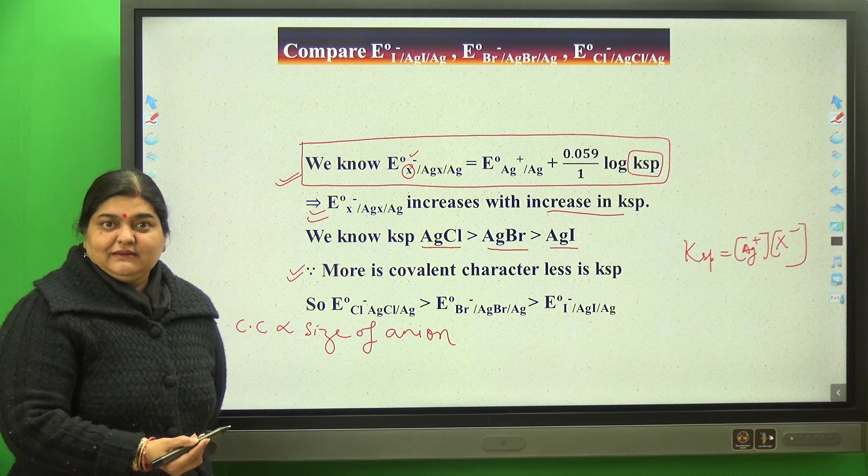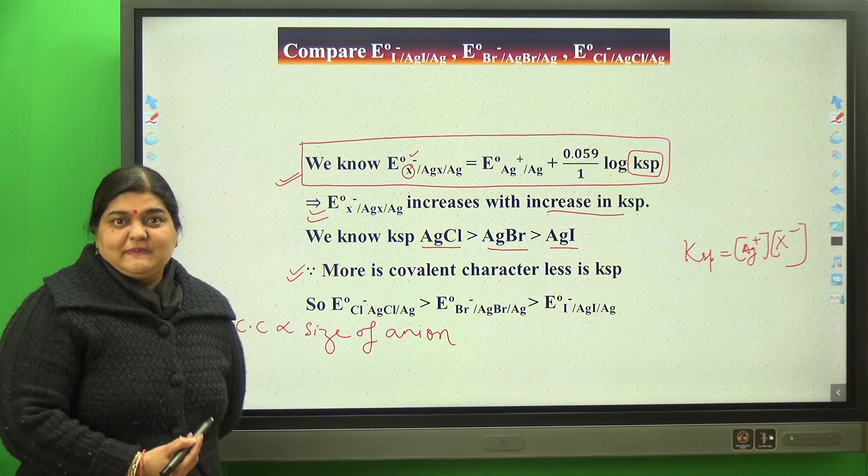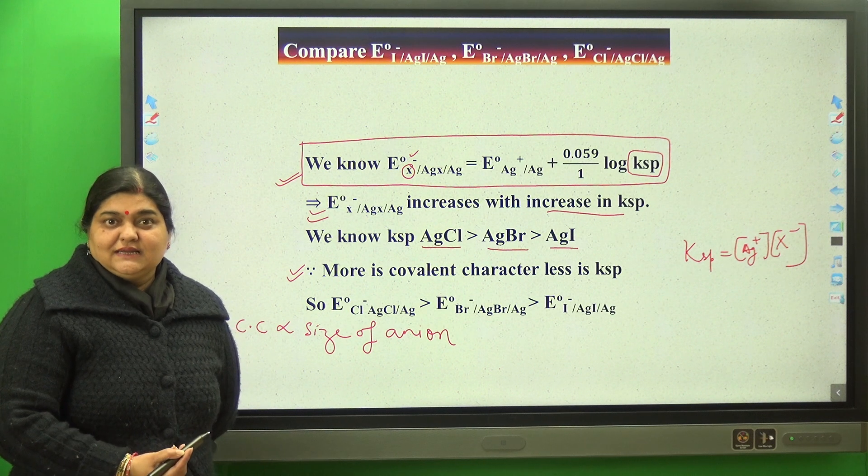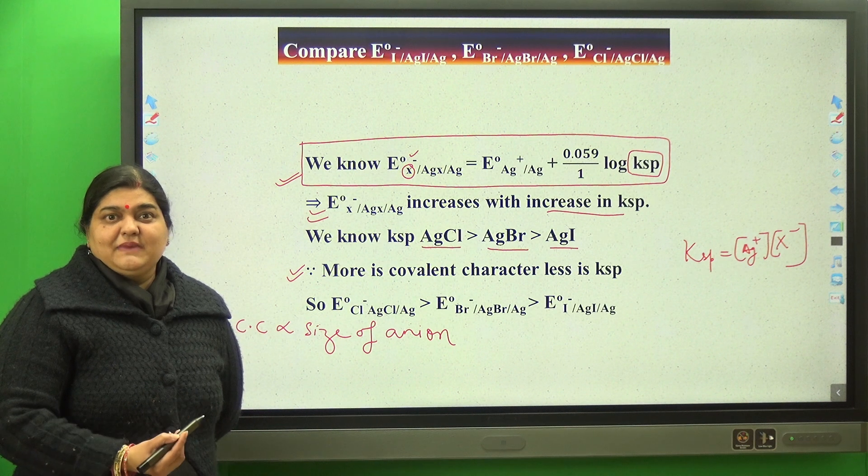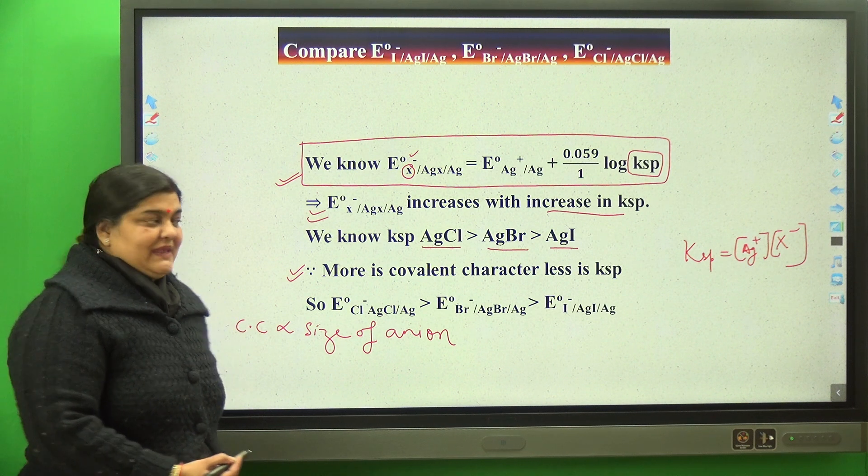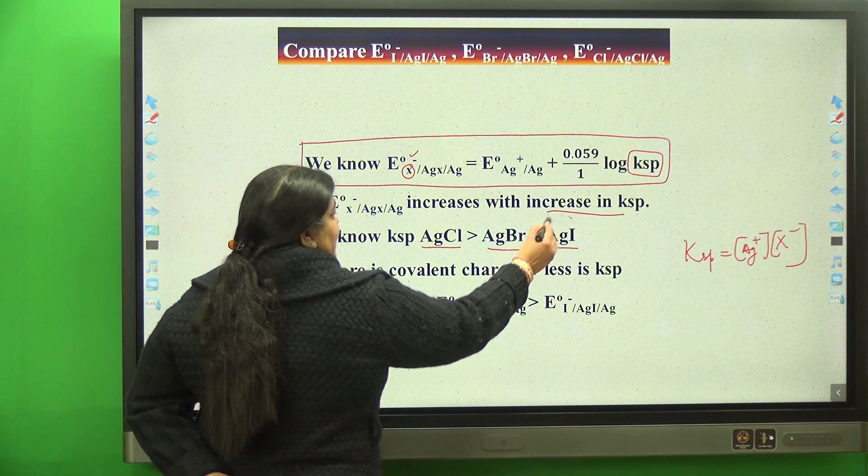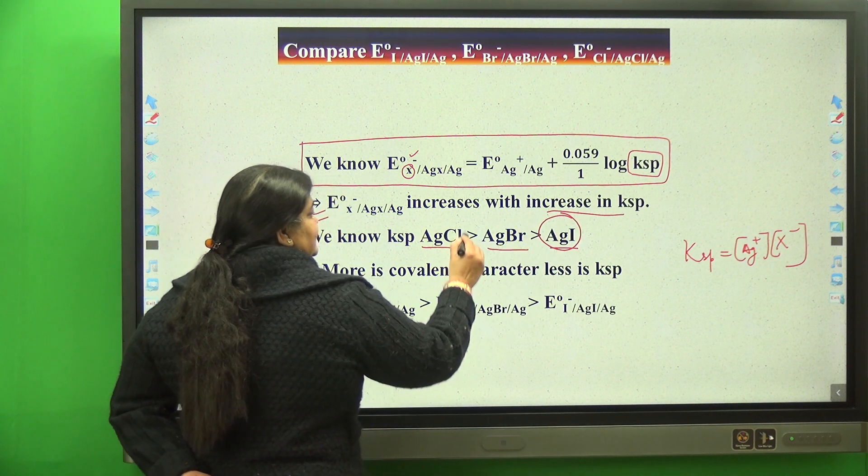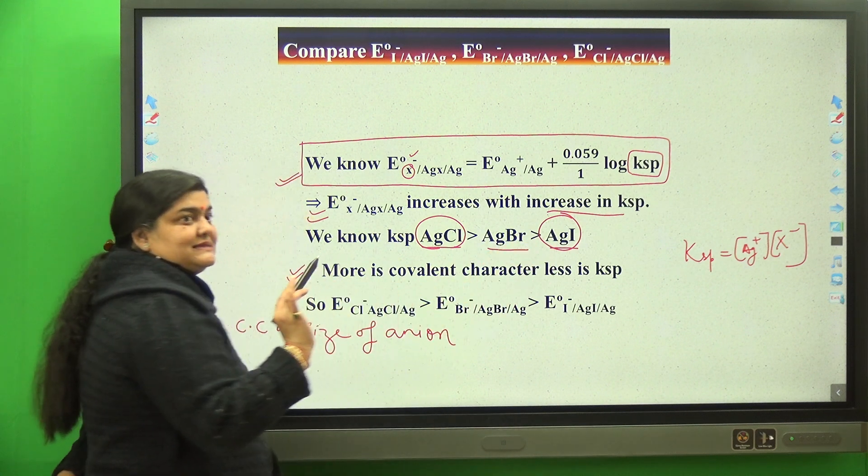The anion is different. The larger the anion size, the greater the covalent character. The greater the covalent character, the fewer the ions, and the smaller the KSP. So this means KSP of AgI is least and AgCl is highest because I⁻ is largest in size.